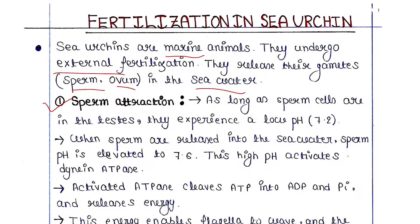As long as sperm cells are in the testis of the animals, they experience a low pH of 7.2, because the environment of the testis has a pH of 7.2. When sperm are released into the sea water, sperm pH is elevated to 7.6. This high pH activates dynein ATPase.